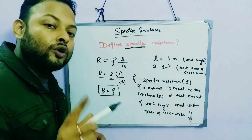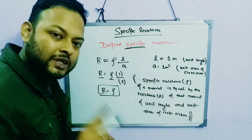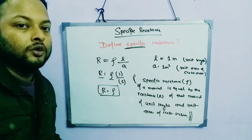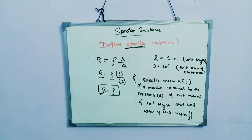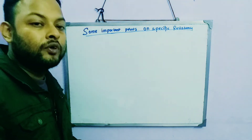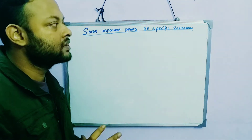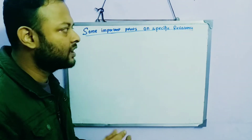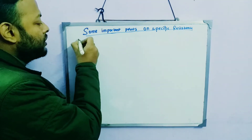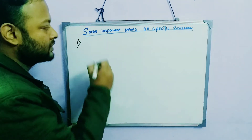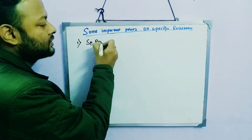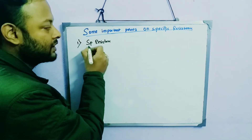Don't get confused between resistance and specific resistance. Now we have to discuss some important points on specific resistance. There are basically four points you need to know. The first point: specific resistance does not depend on the size and shape of the conductor.